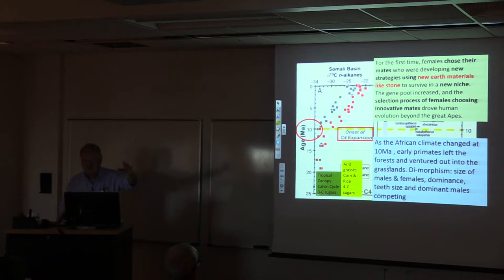This new grass niche apparently drove human evolution. Earth materials were used like stone, and this gene pool increased. The selection process of females choosing innovative mates, these anthropologists now think is what drove evolution beyond the great apes. That's pretty stunning to me. That's one year old. I think if that's correct, it's letting us into a whole new realm of understanding about who we are and where we came from.